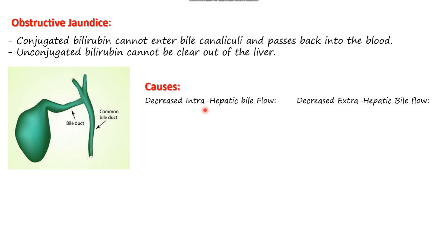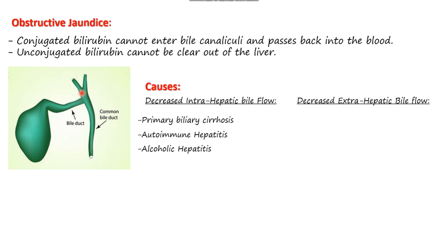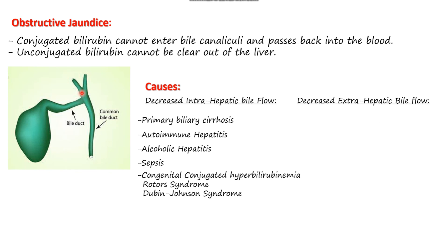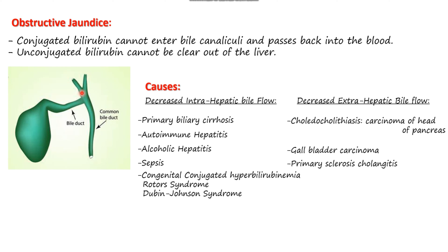There are two basic causes of obstructive jaundice: decreased intrahepatic bile flow and decreased extrahepatic bile flow. Causes of decreased intrahepatic bile flow include primary biliary cirrhosis (damage to the liver), autoimmune hepatitis (inflammation of the liver), alcoholic hepatitis due to ethanol, sepsis (liver injured by pathogens or toxins), and congenital conjugated hyperbilirubinemia including Rotor syndrome and Dubin-Johnson syndrome. For decreased extrahepatic bile flow, causes include choledocholithiasis (at least one gallstone in the bile duct), carcinoma of the pancreatic head, gallbladder carcinoma, and primary sclerosing cholangitis (inflammation of bile ducts inside or outside the liver).